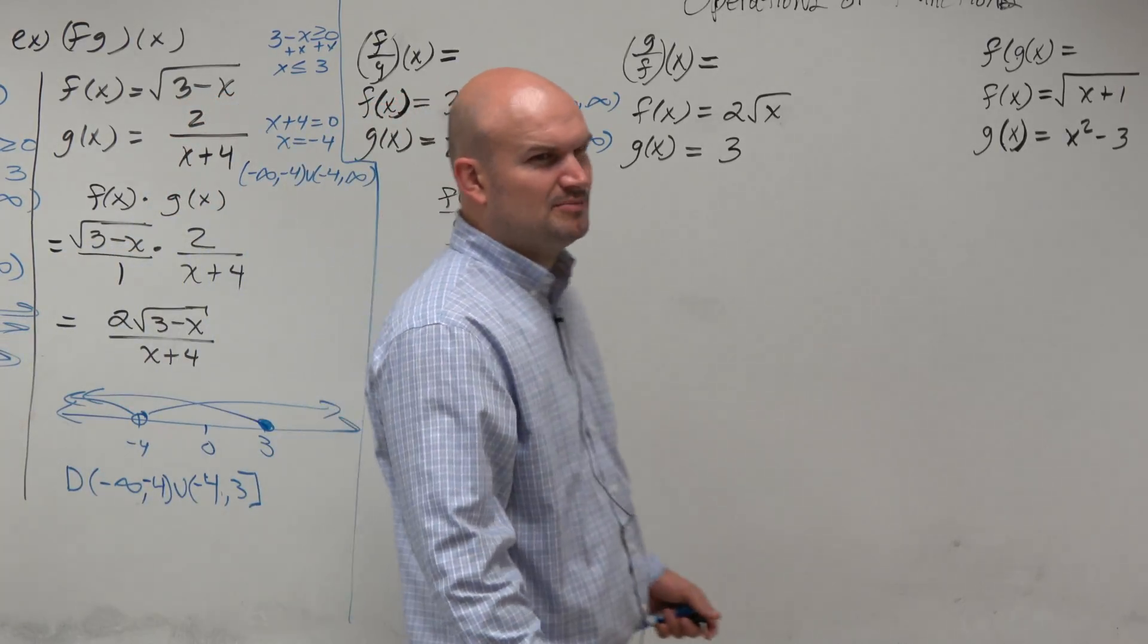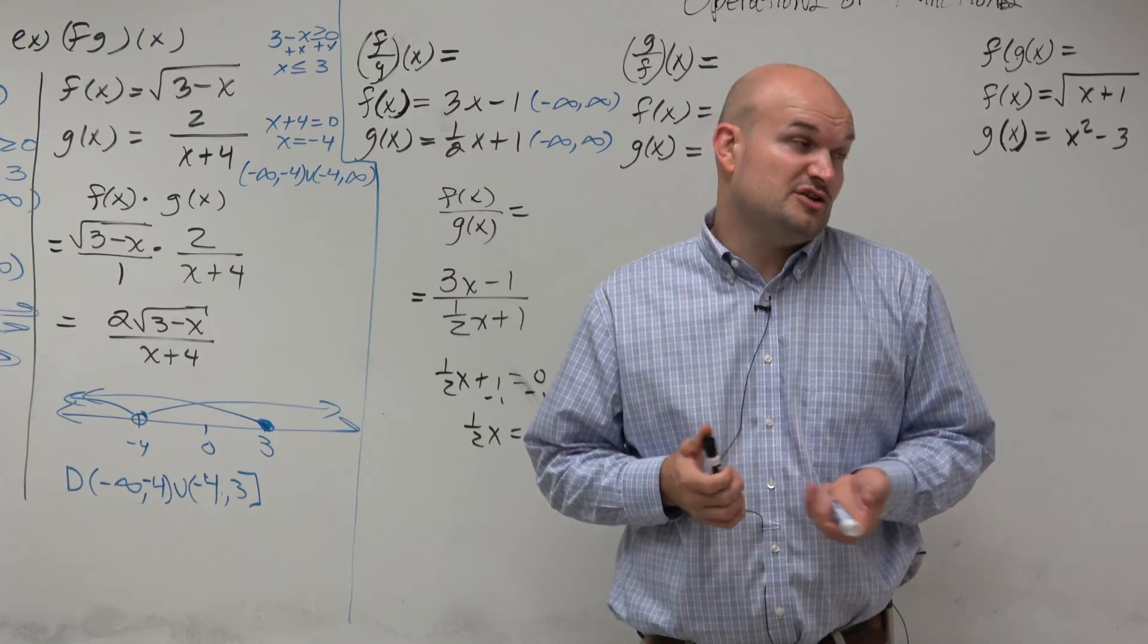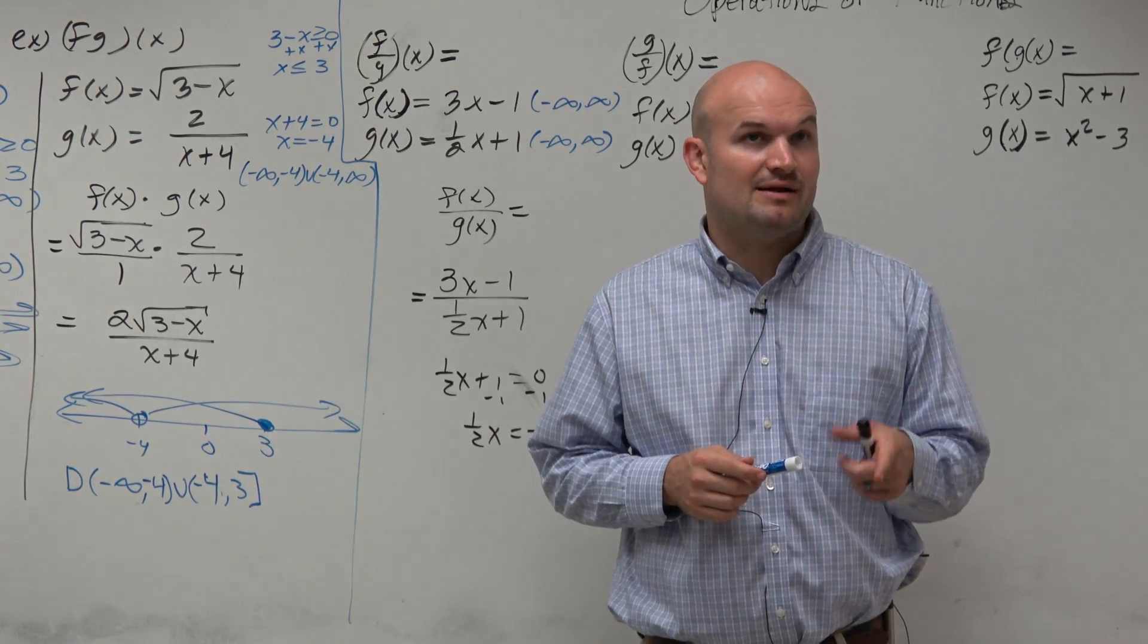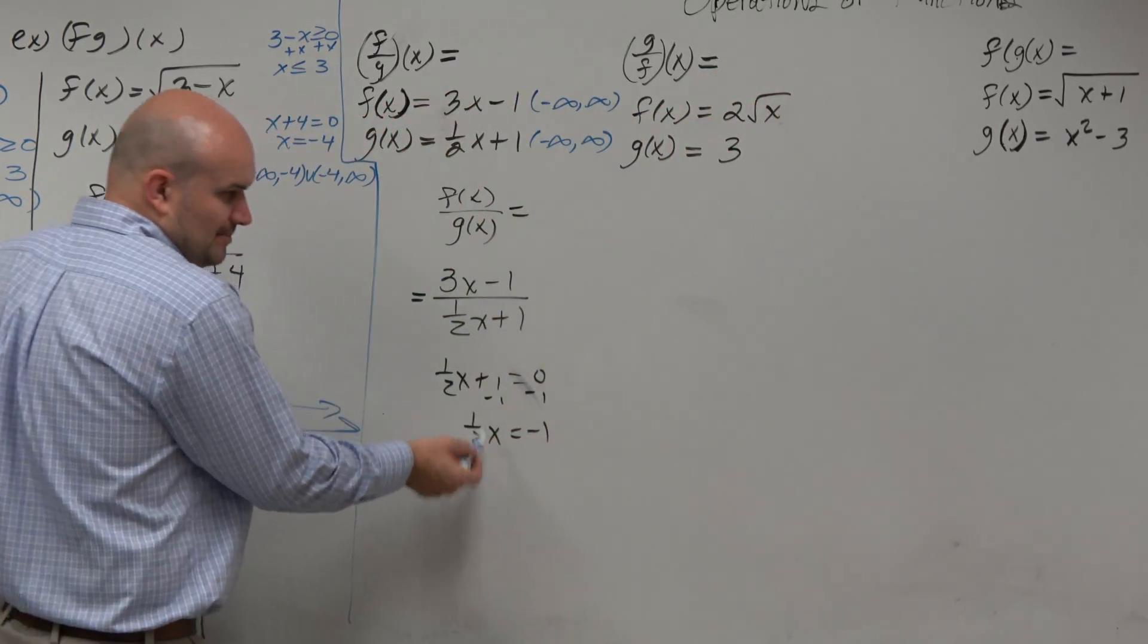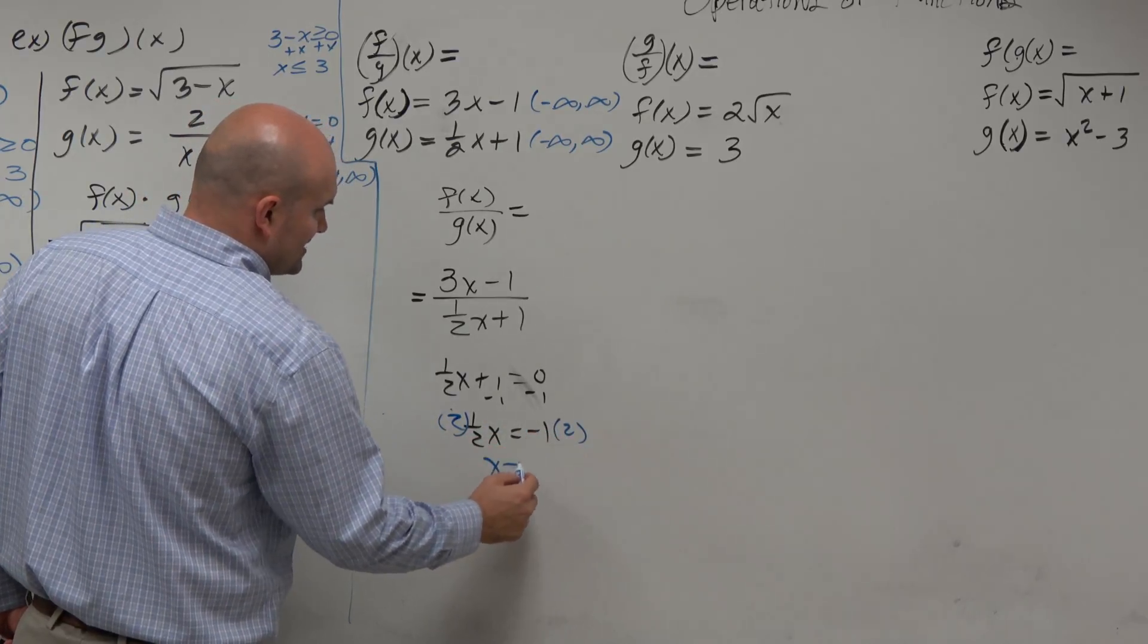1 half x equals negative 1. How do you undo multiplying by 1 half? You could divide by 1 half, but dividing by 1 half is the same thing as multiply by the reciprocal. What's the reciprocal of 1 half? 2. x equals negative 2.